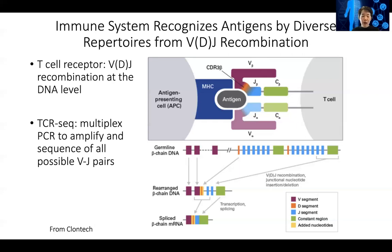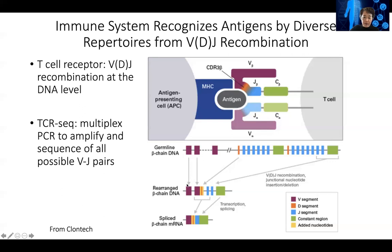There are ways to do TCR sequencing — usually in the blood, or you can also do this in the tumor. This uses a multiplex PCR reaction to amplify out all possible VDJ pairs. You have one PCR primer on each V and each J, which amplifies out all the VDJ pairs. After that, there needs to be a size selection, because non-productive VJ pairs will also get amplified and you don't want those. The final result tells you this VDJ sequence is this abundant, another VDJ sequence is at this abundance, and so on.